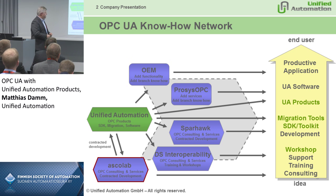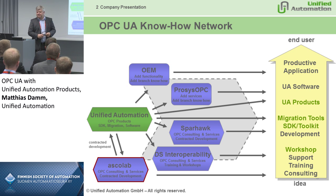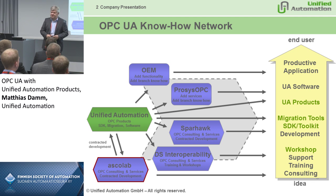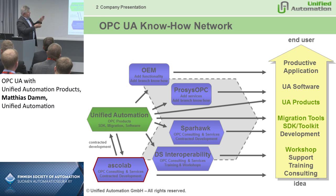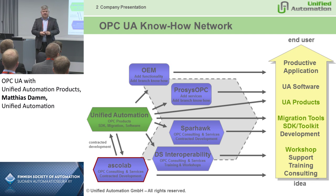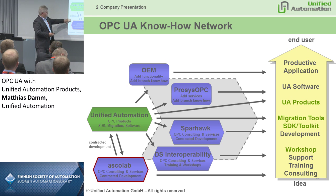That was the starting point where we decided to create a new company called UNIFI Automation, which does the product business. ASCOLAB does OPC consulting and services — we do consulting for a lot of automation vendors and other companies that implement and integrate OPC UA into their products. Our first goal is all about building an OPC UA know-how network to support product vendors and end-users in integrating OPC UA into their products, solutions, and machines. ASCOLAB does a lot of the background development and consulting for UNIFI Automation.